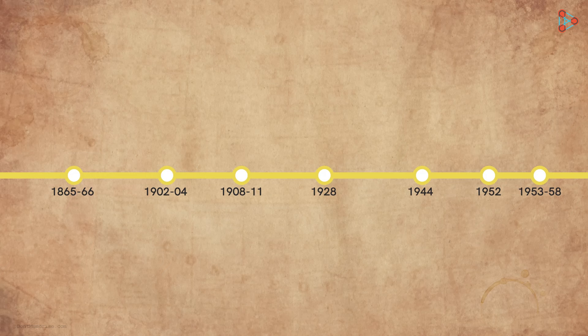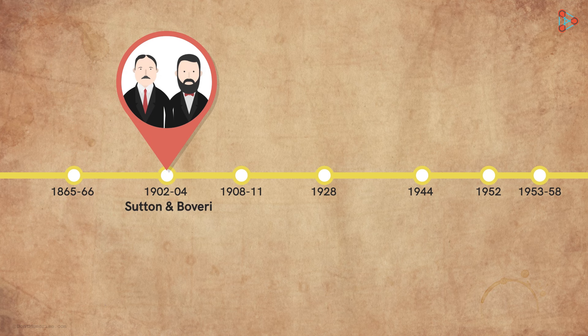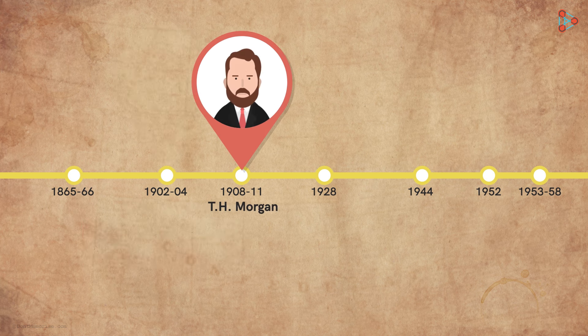This is our timeline of the history of genetics. So far, we have covered the important milestones up to this point. We have taken a look at the work of Gregor Mendel, followed by the work of Sutton and Boveri. This was the chromosomal theory of inheritance. Later, it was Thomas Hunt Morgan who put forth his work on the common fruit fly and achieved another milestone.